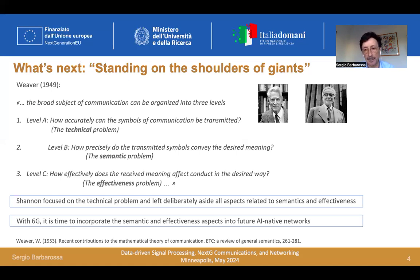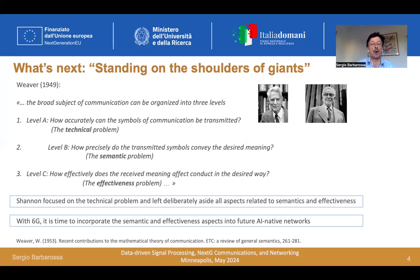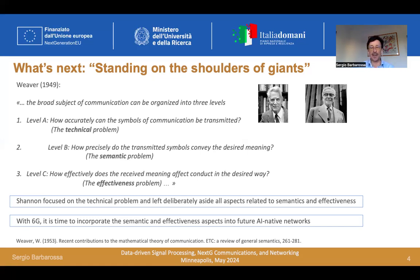Then we have the semantic problem, where rather than being concerned with bits themselves, we are concerned with the meaning conveyed by those bits. And finally, we have the effectiveness problem in Weaver's words, where there is a clear goal of the communication — why these two entities communicate, probably because they have a common goal to achieve. Shannon focused deliberately on the technical problem, leaving aside semantics and effectiveness. Maybe it's time, with 6G AI-native networks, to incorporate semantic aspects into network design.